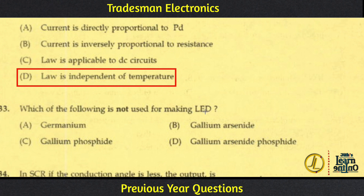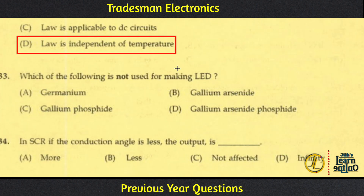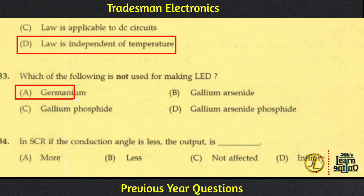Which of the following is NOT used for making an LED? LEDs use compound semiconductors. Germanium is NOT used for making LEDs; compound semiconductors are used instead. Germanium is the answer.